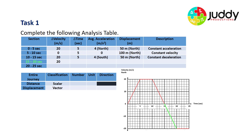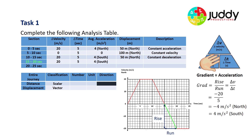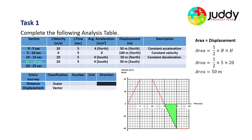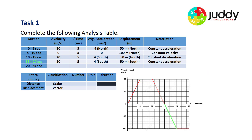From 15 to 20 seconds, we have a change of velocity from zero all the way down to minus 20. The change of velocity of 20 meters per second takes five seconds. A gradient of negative four meters per second squared north, also expressed as four meters per second squared south. The displacement is the area, and this time it's the area below the x-axis — so this is 50 meters in a southerly direction. Relative to south, this is constant acceleration.